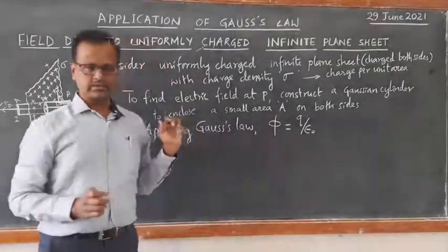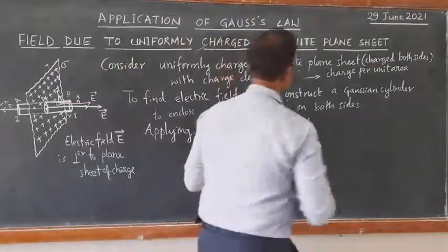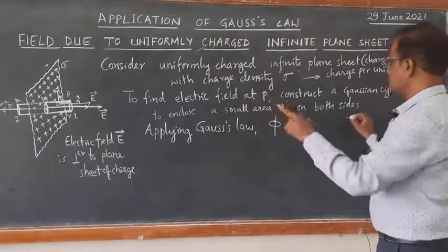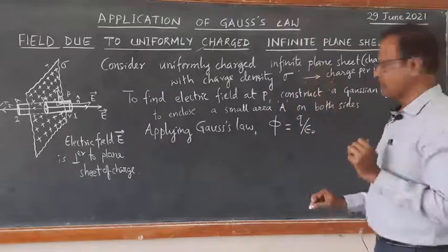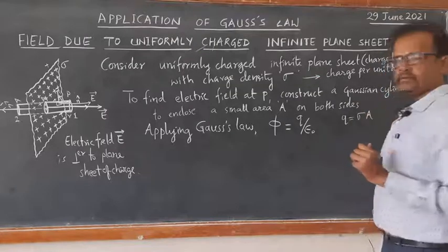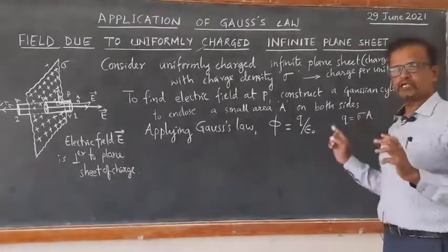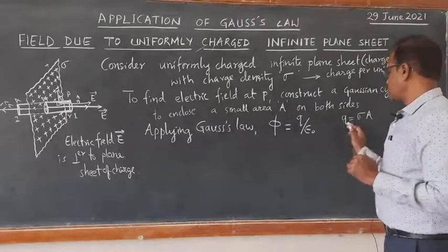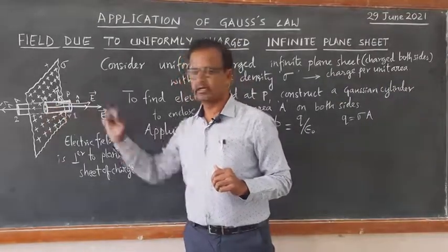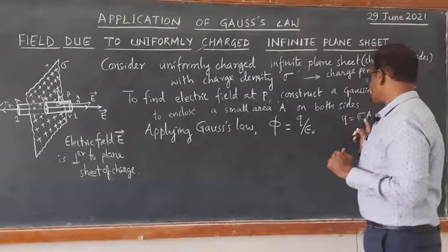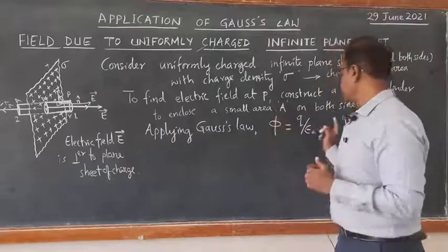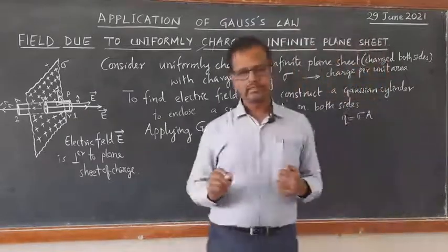Before calculating total flux, we find the charge enclosed. The charge enclosed Q is within area A. So Q equals sigma times A, because sigma is charge per unit area. Therefore sigma equals Q over A, and Q equals sigma A, which can be substituted into Gauss's law.